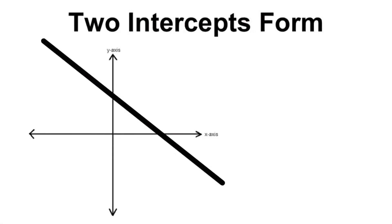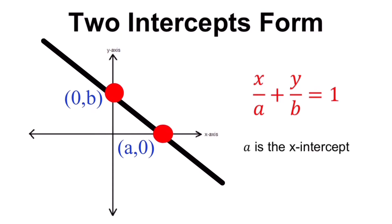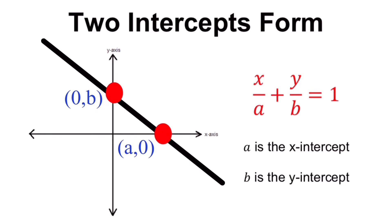If we are given two intercepts of the line — that is (0, b) which is our y-intercept, and (a, 0) as our x-intercept — we can use the formula x over a plus y over b equals one, where a is the x-intercept and b is the y-intercept. This is called the two-intercept form, or the double intercept form, of a line.